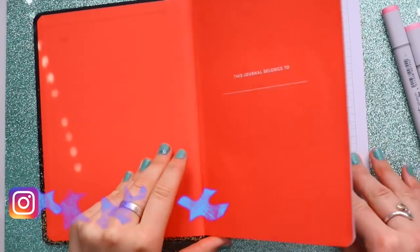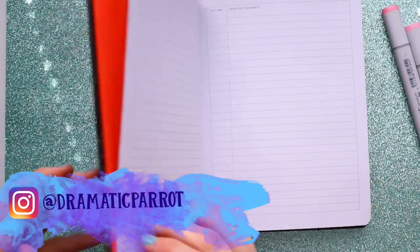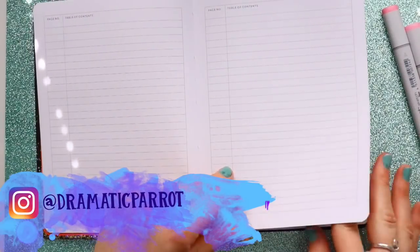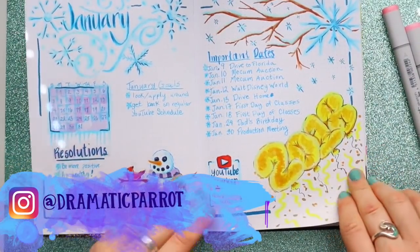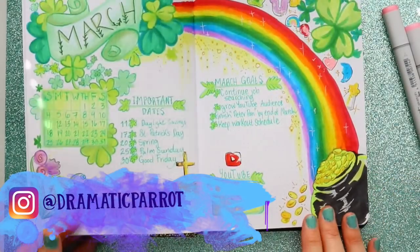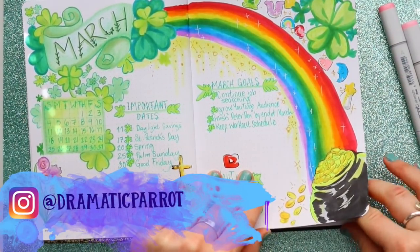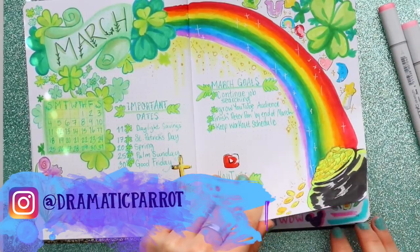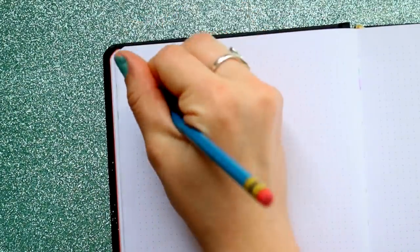Hey guys, it's me Priscilla and I'm back with another bullet journal for the month of April — wonderful, springy April! There's a lot of fun stuff going on in April. One important date is April 1st, because not only is it Easter, but it's also my boyfriend's birthday and it's April Fool's Day, so laughs on all of us.